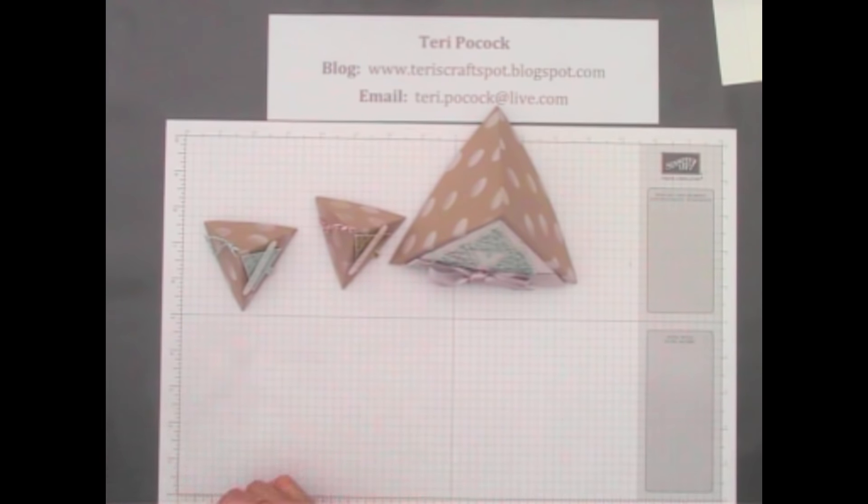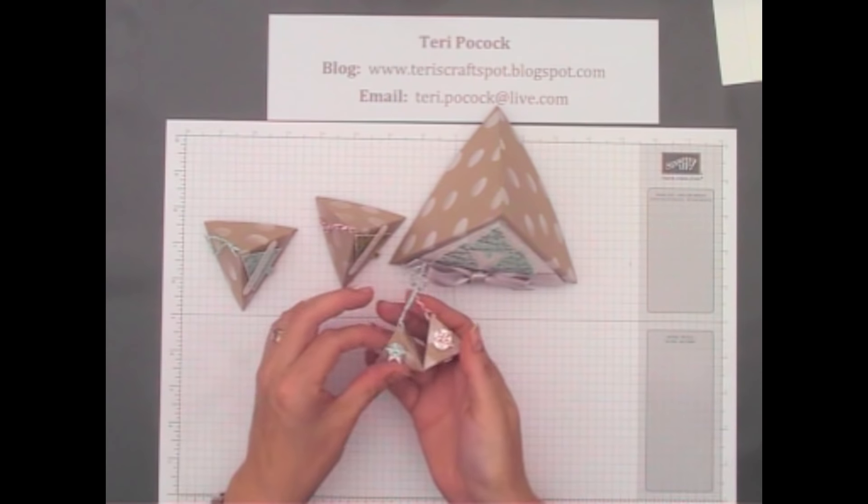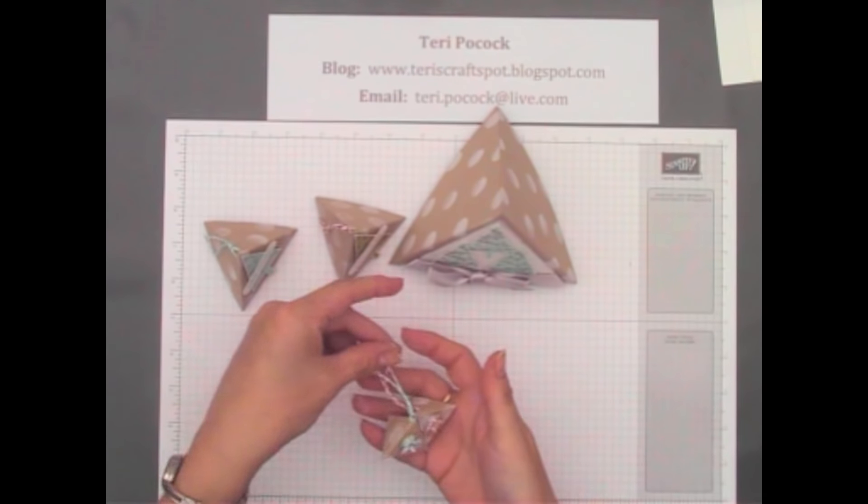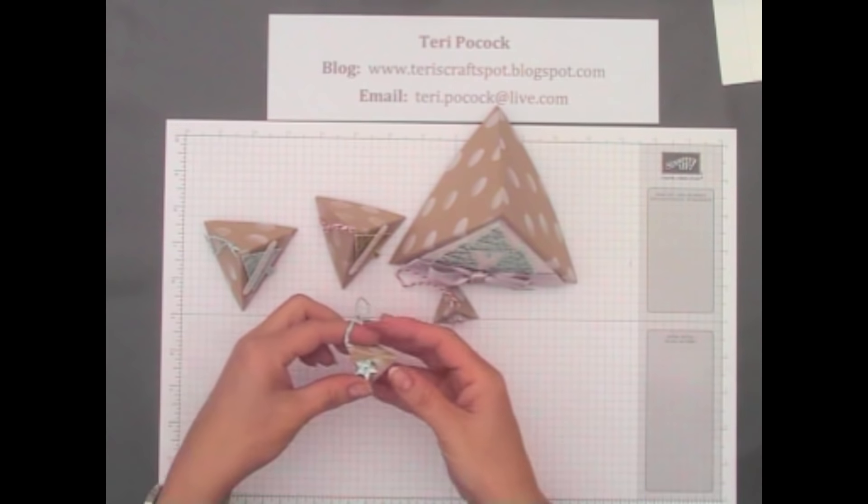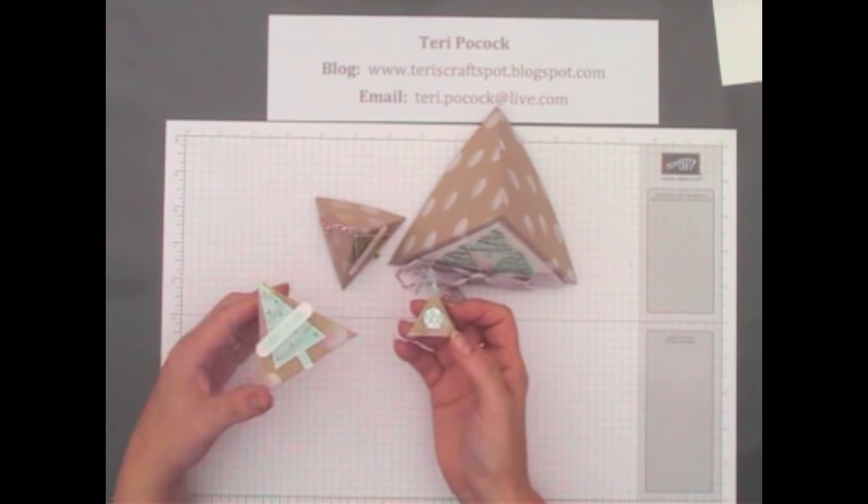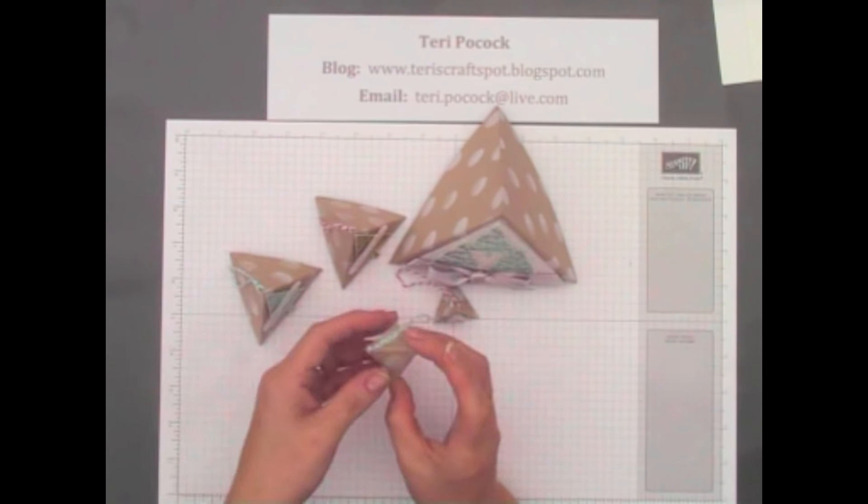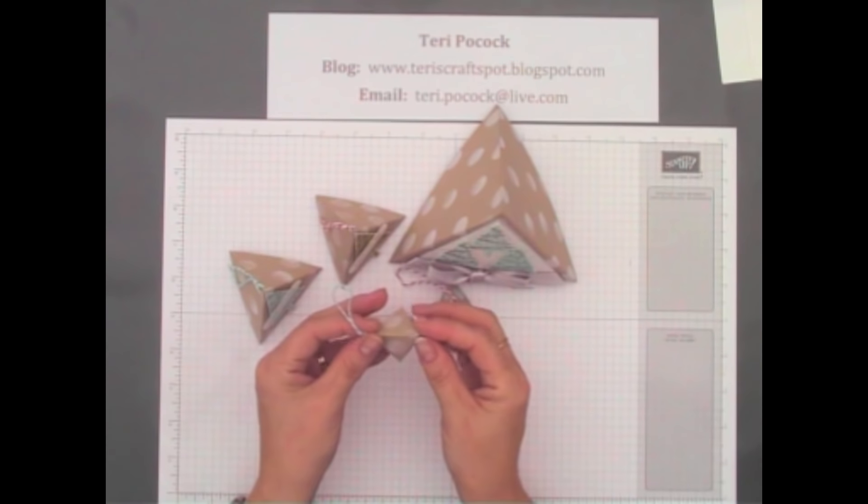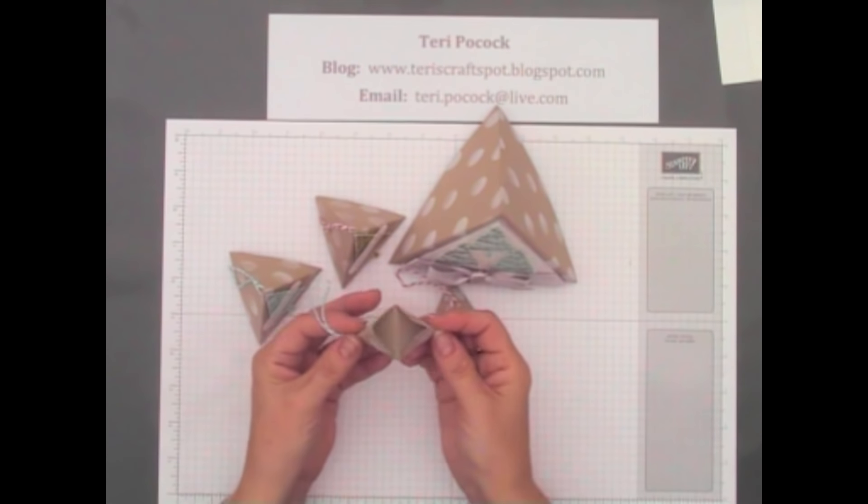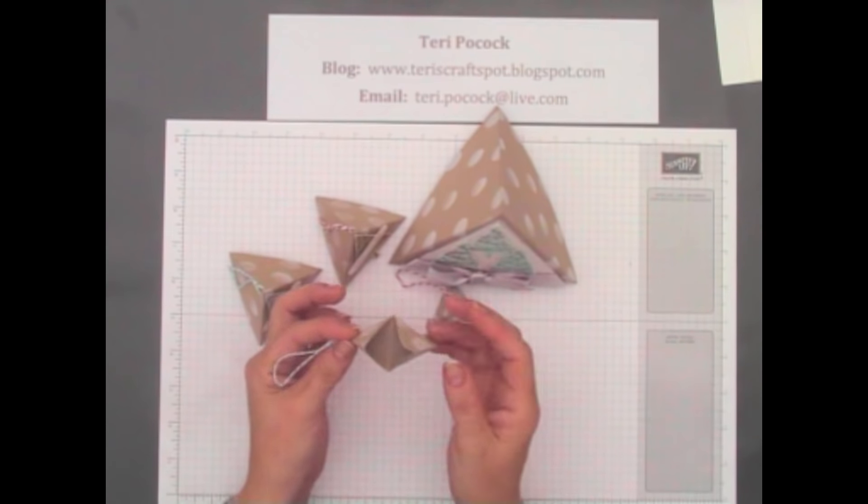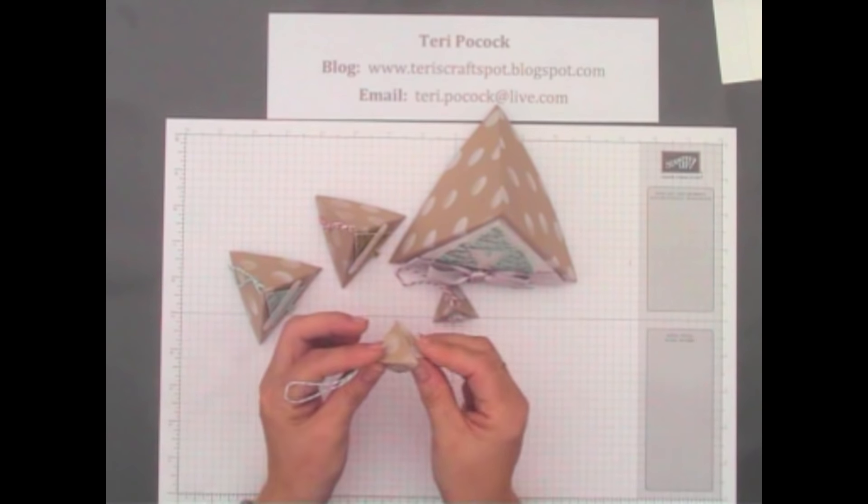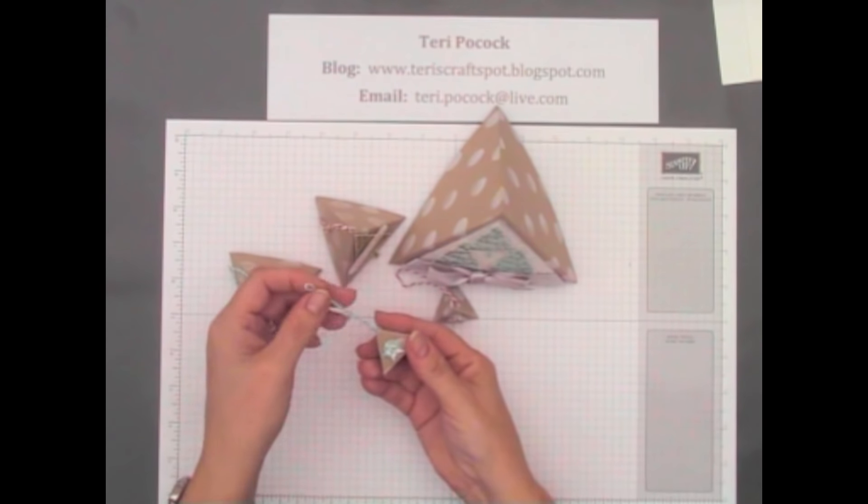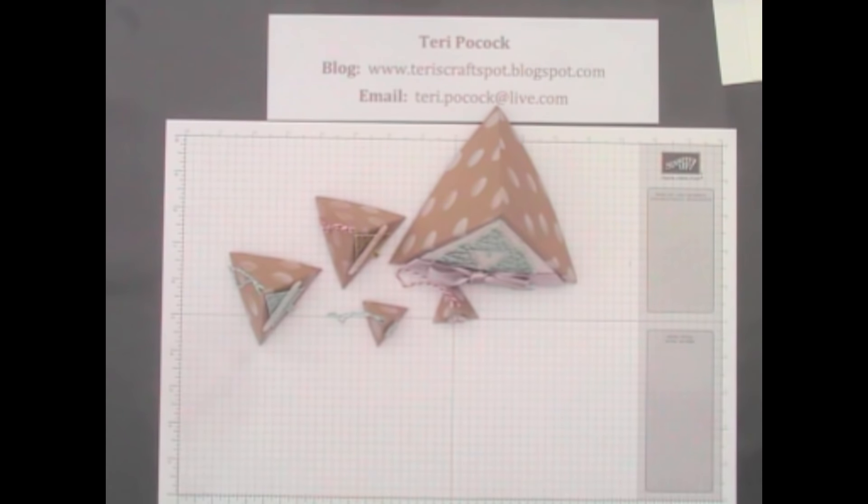And then also for my swaps I've been making these really sweet tiny little ones that again you can hang on the tree. Now these are exactly half the size of my original one. So you can play around with the sizes that I'm going to give you and make them any size you want. These I'm just going to put a tiny little chocolate tree in there. So let's get started.